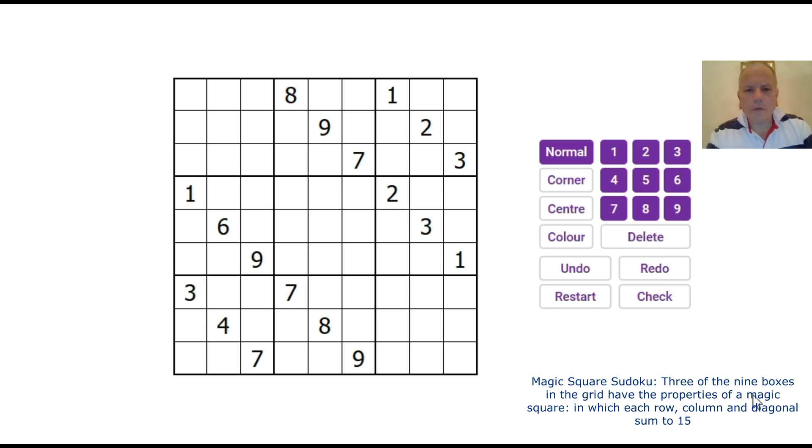And that's the way it goes. Here's the second puzzle for the app with the video, which is a magic square Sudoku. Now, in this puzzle, in three of the boxes, of the nine boxes of the puzzle, there is a three by three magic square. So each row, column, and diagonal adds up to 15.